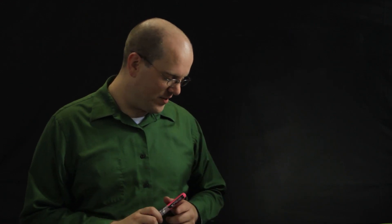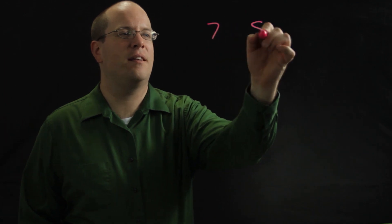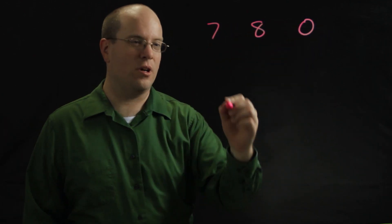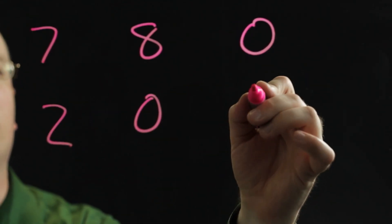I'm going to draw out six cards. I actually already drew them out here. I have a seven, an eight, a zero, a two, another zero, and a four.